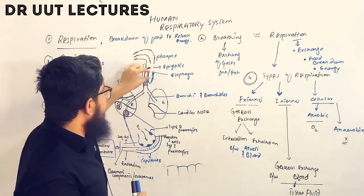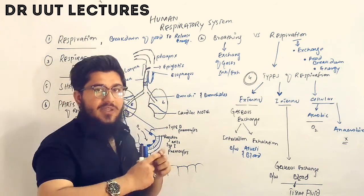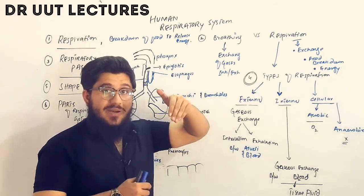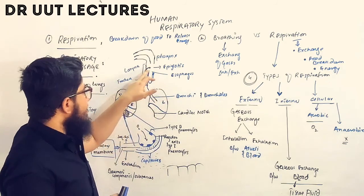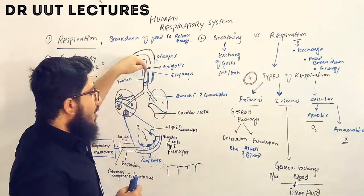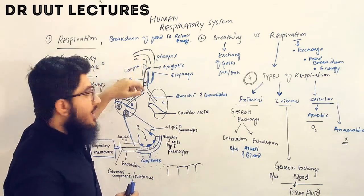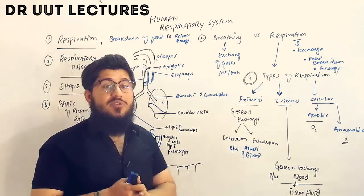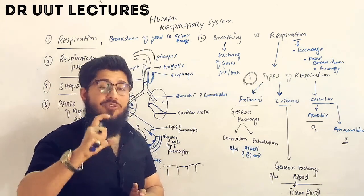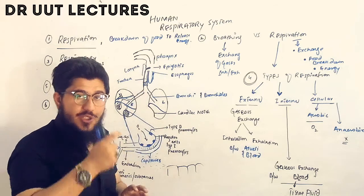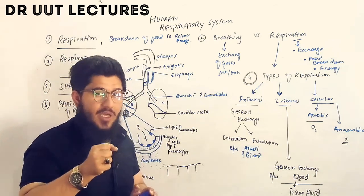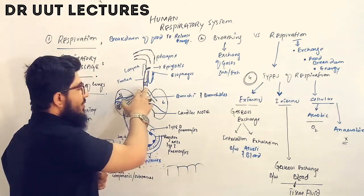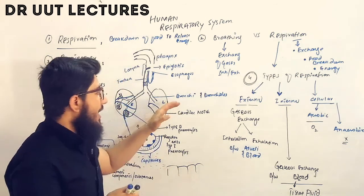When a large particle enters, the epiglottis closes the windpipe so that particle enters the esophagus and becomes part of the digestive system, processed by the GIT. Once it passes into the esophagus, the epiglottis reopens to allow air into the windpipe. The trachea is composed of C-shaped incomplete rings made of cartilage, which support it so it does not collapse.